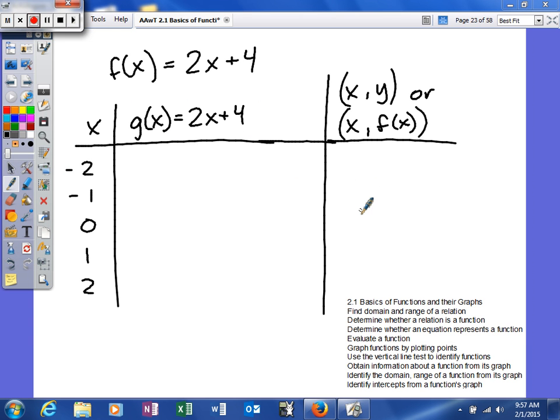Basically what we're going to do is just—whoops, I wrote the wrong letter up here. We're going to talk about how to graph functions by plotting points. So here you go, you've got a function g of x equals 2x plus 4, and we're going to plug in some of our x's. These are independent variables, so we'll plug them in.